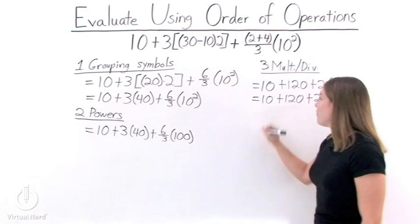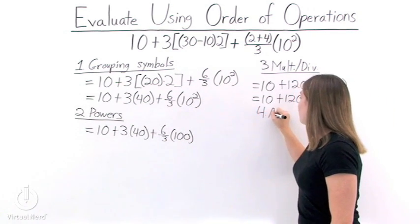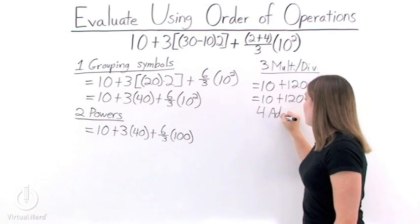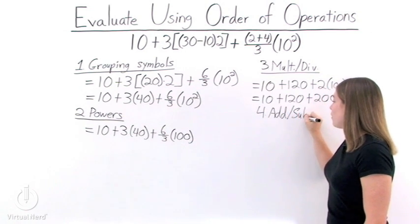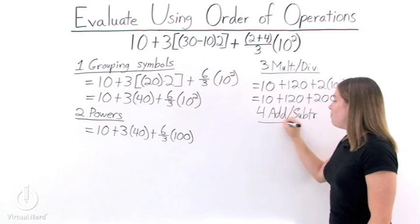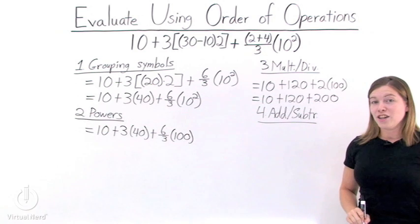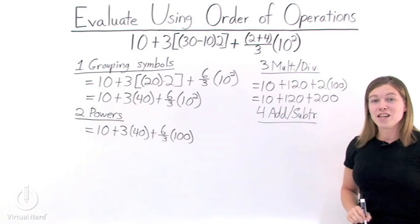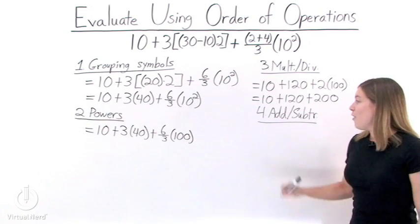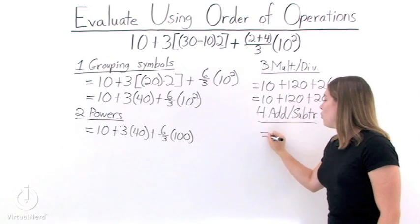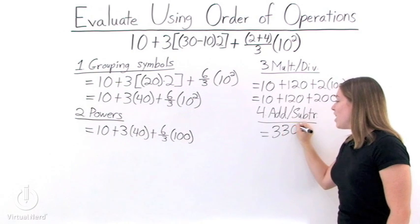Last step. The last step in the order of operations is to add and subtract from left to right. Since we don't have any subtractions, all we need to do is add everything together. When we do, we get an answer of 330.